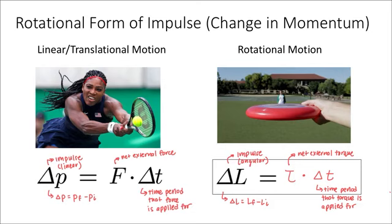The frisbee would also have linear momentum as it's traveling through the air linearly and angular momentum as it's spinning. But in order to give it angular momentum, you had to apply a torque to it for a certain amount of time. And in order to change something's linear momentum, we apply a force to it for a certain amount of time. And so these two expressions are analogous.